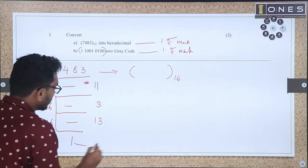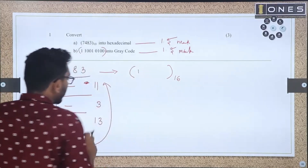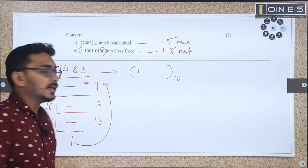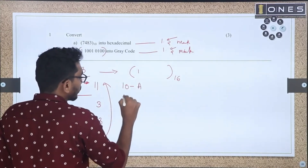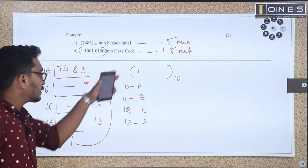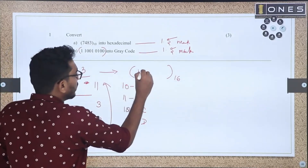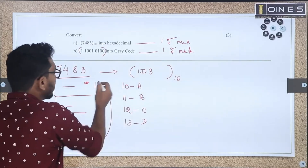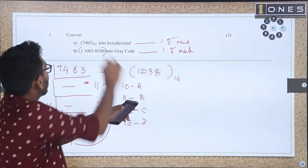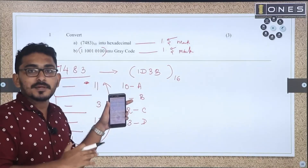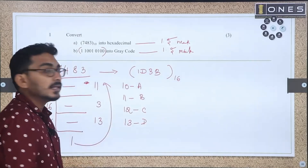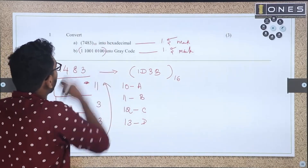Reading the remainders from last to first: 1, 13, 3, 11. Now mapping to hexadecimal digits — 0 to 9 remain the same; 10 = A, 11 = B, 12 = C, 13 = D. So the result is 1D3B.